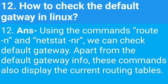How to check the default gateway in Linux? Using the commands 'route -n' and 'netstat -nr', we can check the default gateway. Apart from the default gateway information, these commands also display the current routing tables.